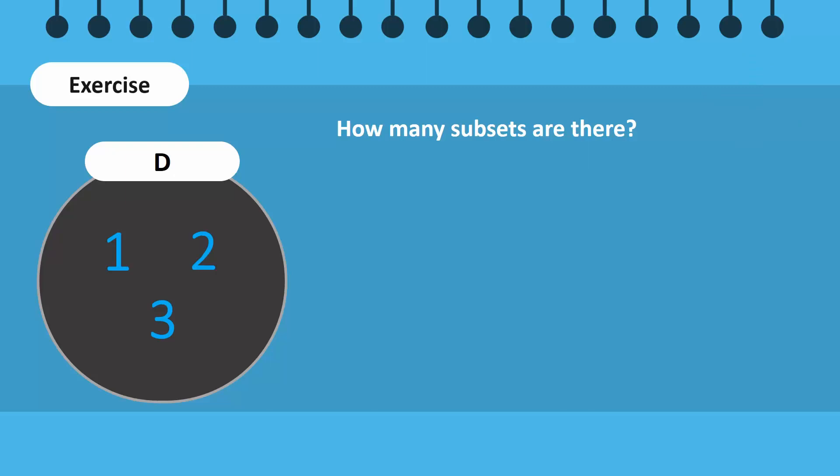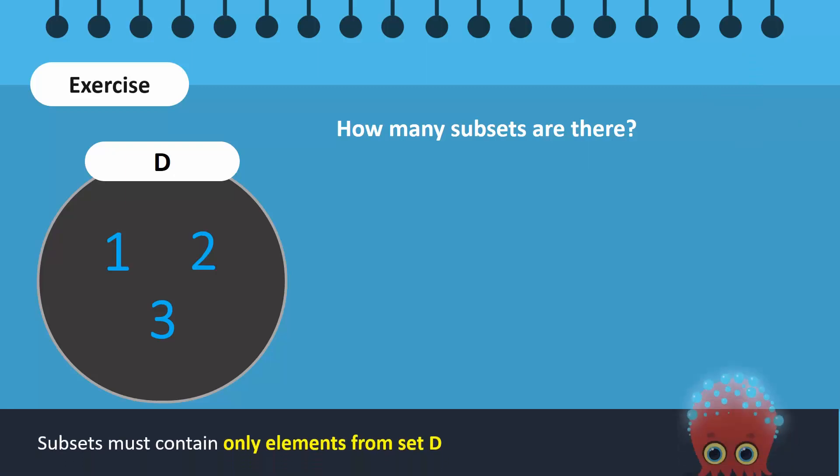Let us review. We know that any subset of set D must contain elements that are only present in set D. These subsets may contain different numbers of elements, from 0 element to 3 elements.